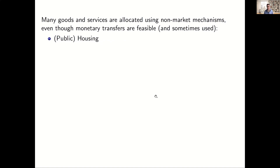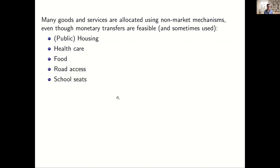There are lots of examples, even though monetary transfers are feasible and sometimes used in parallel. Think about housing — there is primarily a private housing market, but there are also in many cities and countries around the world public housing programs where houses are allocated either for free or at very reduced below-market prices. In Europe, healthcare is mostly provided in some public system for free or at discounted prices. Food stamps in the US, road access, school seats, park permits, and so on. In most countries, vaccines are being allocated effectively for free, even though some economists have argued in favor of using prices.